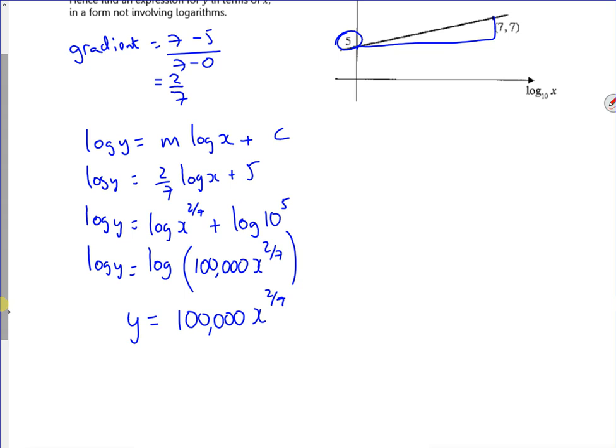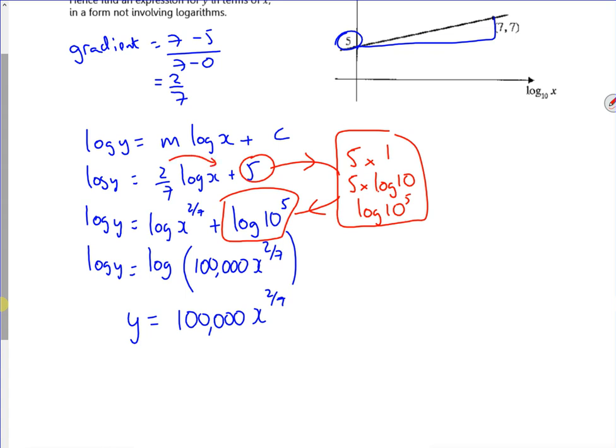And I knew what the gradient was and I knew what the intercept was. So I've kind of used log laws. So I've changed the intercept as 5 is actually log of 10 to the power of 5. If you're not happy with that, you can see the 5 as being 5 times 1, which is then log of 10, which then if you take the 5 up, it becomes 10 to the power of 5. So that's one way of looking at how it changed that 5 into that log.